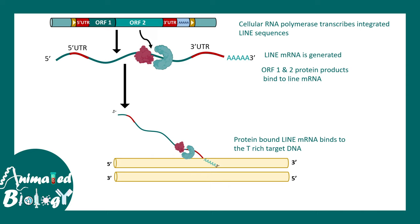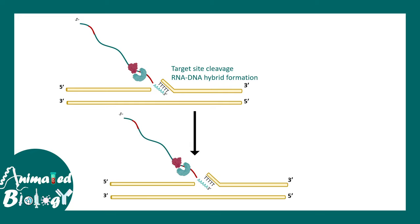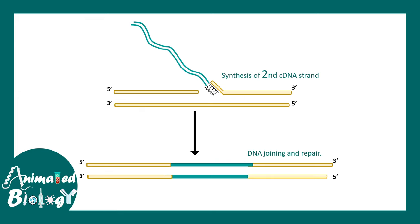LINE mRNA generally binds to poly-T rich regions in the DNA. A target-site cleavage occurs, an RNA-DNA hybrid forms, and reverse transcription takes place. The first strand of cDNA is synthesized, followed by the second strand. Finally, DNA joining and repair incorporate these elements into the genome, completing how LINEs — non-retroviral retrotransposons — get integrated.